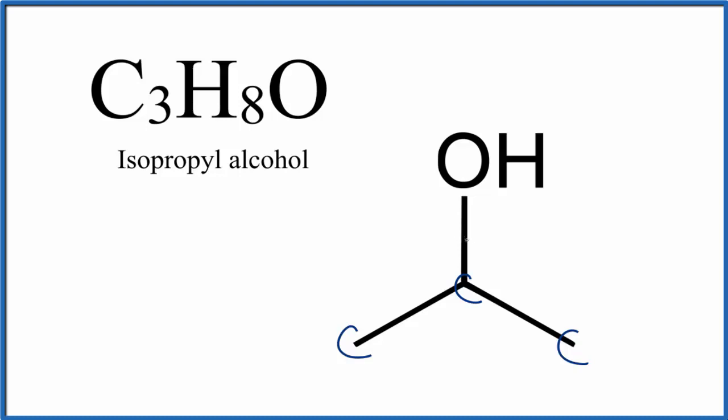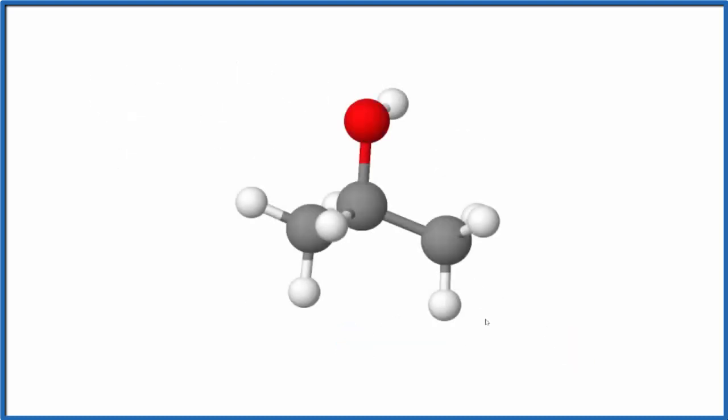Let's look at it in three dimensions though. So this is our isopropyl alcohol molecule here. We have the three carbons, C3, and then the whites are the hydrogen, H8.